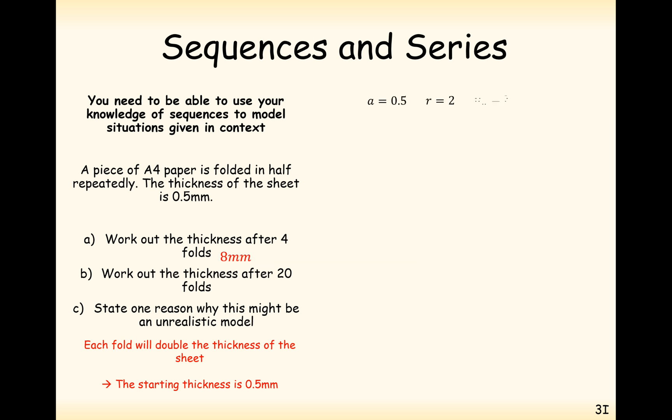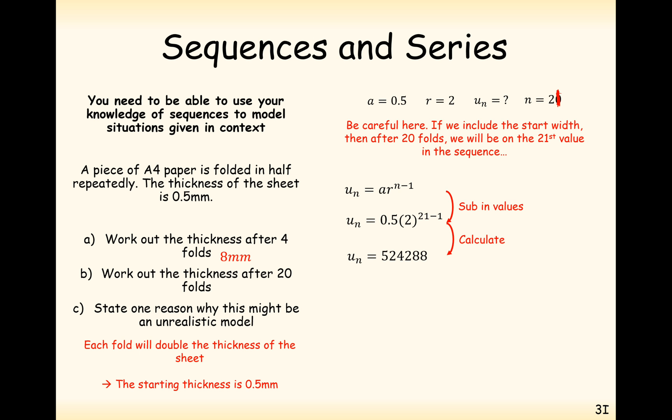After 20 folds, however, we now need an n value of 21. So it's going to be 21 as your value for n. So it's going to be 21 minus 1 gives you 20. We're going to double it 20 times. And now all of a sudden we've got a piece of paper that is 524,288 millimetres thick.